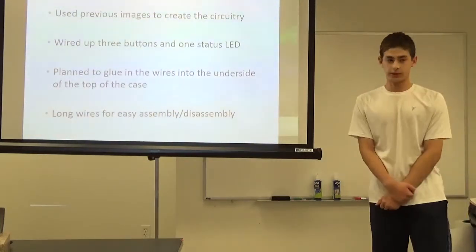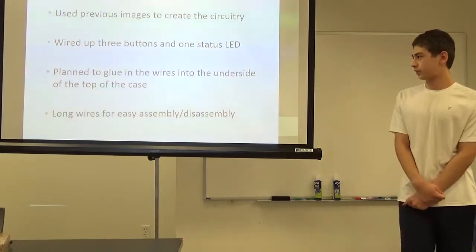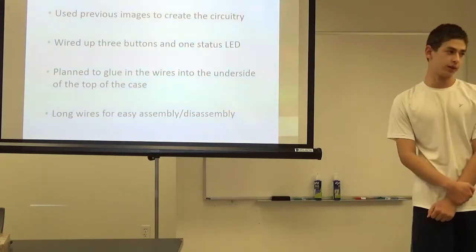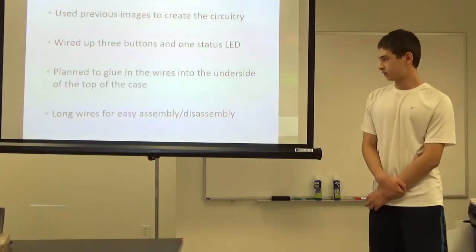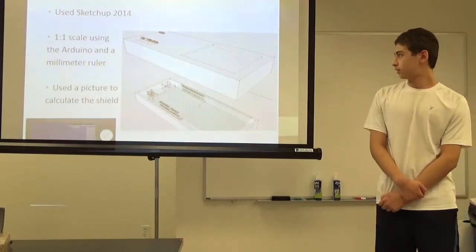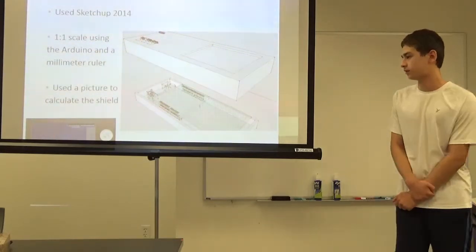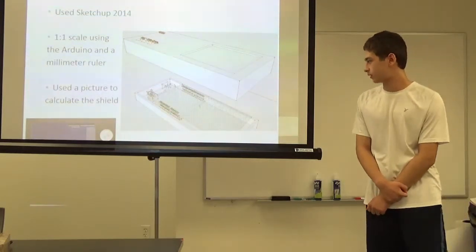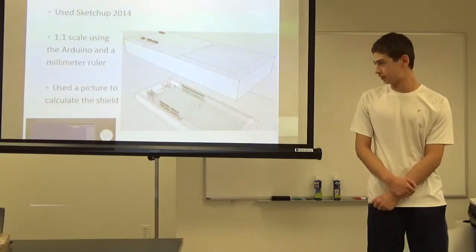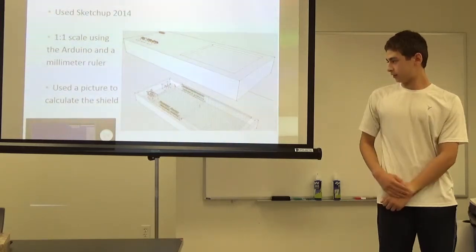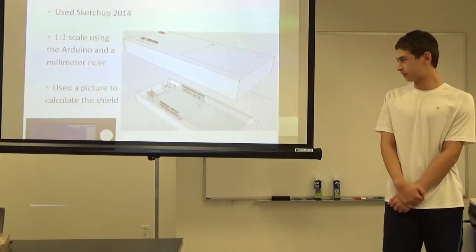I started my physical work. I used the previous images I showed to create my circuitry. I wired up my buttons and status LED. My plan was to glue in the wires into the underside of the top of the case and to make the wires elongated, so it would be easy for inserting and detaching it from the Arduino. This is my case design. I used SketchUp 2014. It's in a one-to-one scale with the Arduino. I used a millimeter ruler to physically measure all the dimensions. Because I didn't have the RFID shield, I actually had to find a picture of it online. As you see at the bottom, there's the shield with the quarter next to it. I had to do ratios and proportions to find the actual dimensions of it because I didn't physically have it on me.